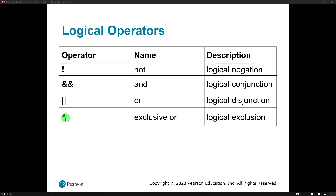Along with that, we also have the exclusive OR, which is the caret symbol located above the six key on your keyboard. It's like a logical disjunction, but it only works if one of the elements is true — this is true or that is true, but they're both not true. We don't see that one quite as often, especially in more rudimentary programming, but it is very useful when you get into certain aspects of logic.